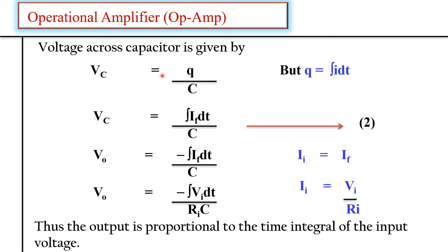The voltage across the capacitor is VC = Q/C, where Q = ∫I dt. So VC = ∫IF dt / C. Since VA = 0 due to virtual ground, Vout = −VC = −∫IF dt / C. Since IF = II = VI/RI, substituting gives: Vout = −(1/RI·C) ∫VI dt.